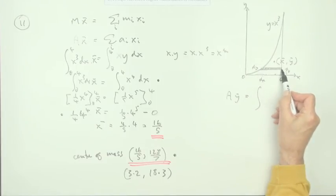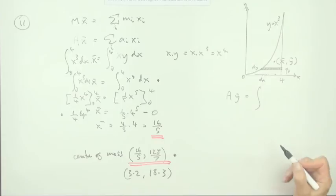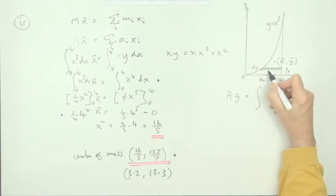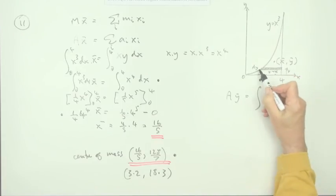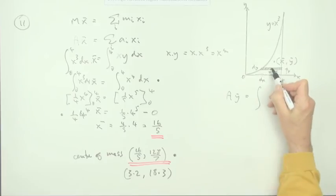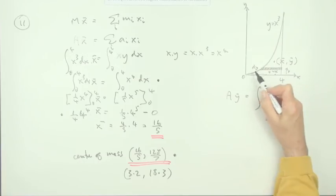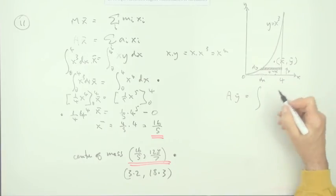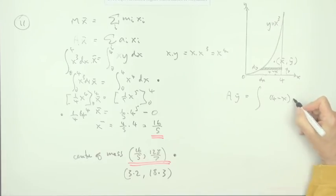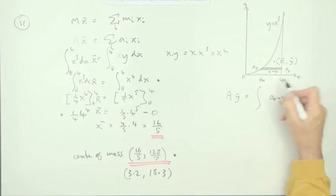it's the rest of x up to 4, so it's actually 4 minus x. So the length of that's going to be 4 minus x, the width of it is dy, and the distance of its center from the axis is y. It's actually y plus a half of dy, but that's going to disappear. So, area, 4 minus x, times its width, 4 minus x times dy, distance from the axis, y.